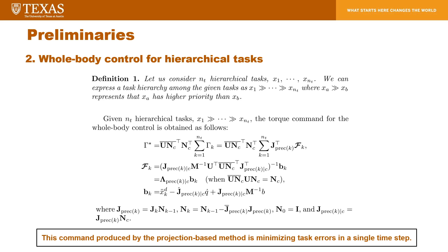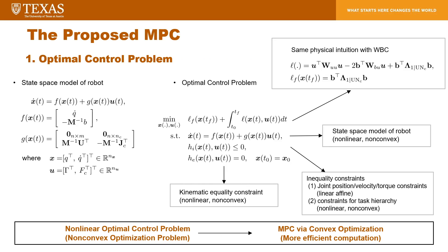Therefore, we propose to predict more time steps to seek a better solution. Looking at the proposed MPC approach in detail, we express the state-space model of the underactuated and constrained robotic system. The state variable is a vector consisting of joint position and velocity, and the input variable contains the torque command and constraint force. The state-space model is nonlinear with respect to the state variable. We can formulate the standard optimal control problem, and one special part is that we borrow physical intuition for the performance index from whole-body control.